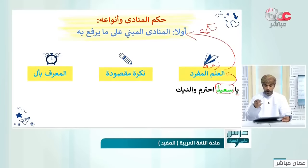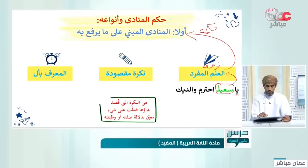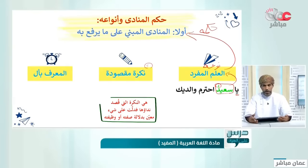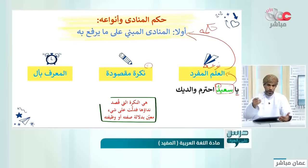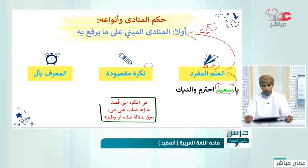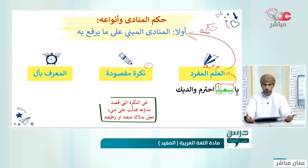مبني على الضم وإكمال الموقع الإعرابي في الحلقة القادمة. النوع الثاني: النكرة المقصودة. هي النكرة التي قصد نداؤها فدلت على شيء معين بدلالة صفته أو وظيفته. فأنا كمعلم في المدرسة قد لا أعلم أسماء جميع الطلاب، فإذا رأيت أحدهم يقوم بسلوك خاطئ وأريد تنبيهه، فأنادي: يا طالب.